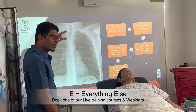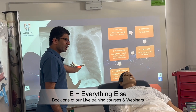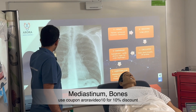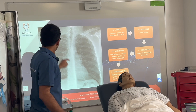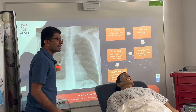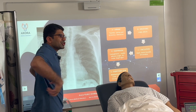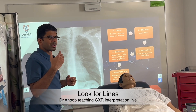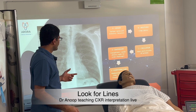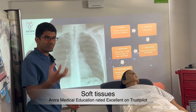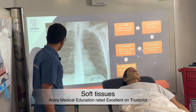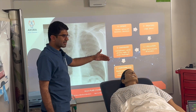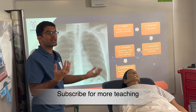E is for Everything else. Come from the top — look at the mediastinum, then look at the bones for any fractures. Trace the ribs slowly — remember, the posterior aspect of the ribs is what's prominent, while the anterior aspect is the curvature. Then look for lines: if you have a central line, is it in place? If you have an NG tube, does it dissect the carina? Look for soft tissue swelling like subcutaneous emphysema. If there's a chest drain, is it in the right place? In cardiology, if a patient has a pacemaker, compare lead positions against old x-rays.